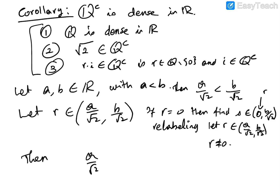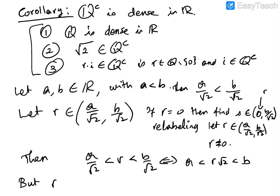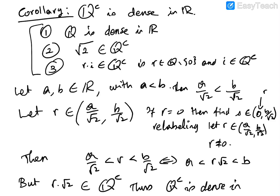Then a over square root of 2 is less than R is less than b over square root of 2. Multiplying by square root of 2 gives you a is less than R times square root of 2 is less than b. But R times square root of 2 is irrational. So we're done — we found an irrational number between a and b.